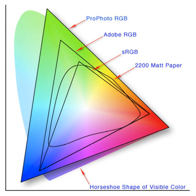RGB uses additive color mixing, because it describes what kind of light needs to be emitted to produce a given color. RGB stores individual values for red, green, and blue. RGBA is RGB with an additional channel, alpha, to indicate transparency.